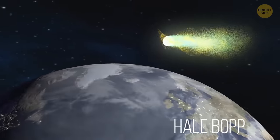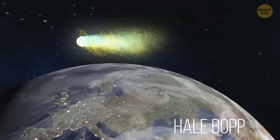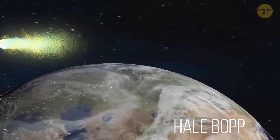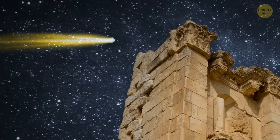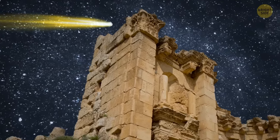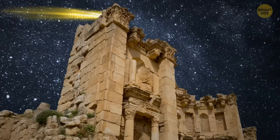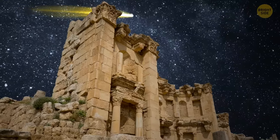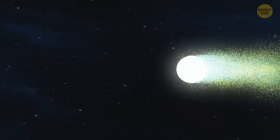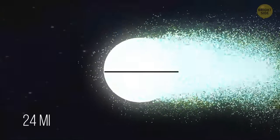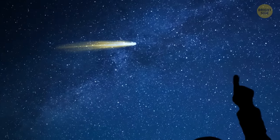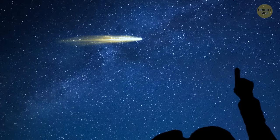Another famous comet is named Hale-Bopp. It came very close to Earth in January 1997. The last time it was seen near our planet before that was during the Bronze Age back in 2000 BCE. This comet is much larger and more spectacular than Halley's. Its nucleus stretches for up to 24 miles in diameter and can be seen from the surface of our planet with the unaided eye.